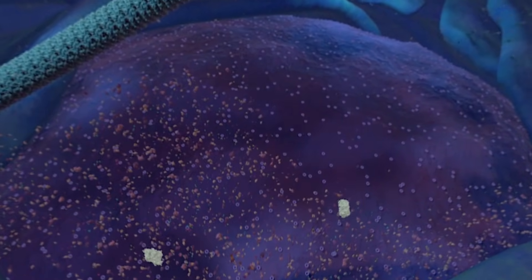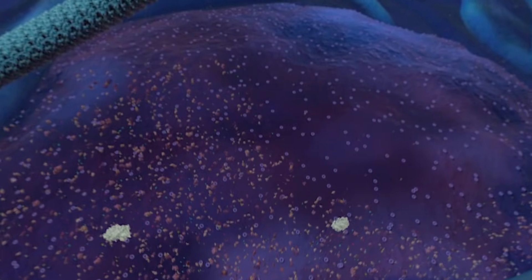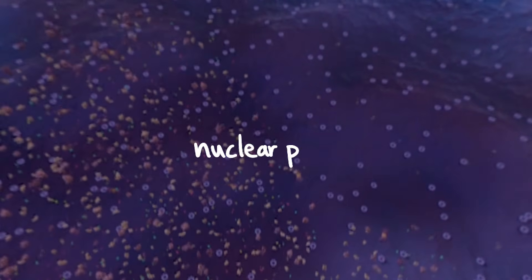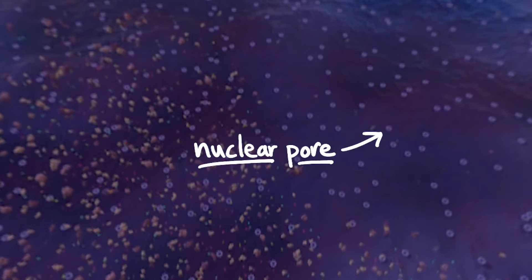On the surface of the nucleus, there are little holes or pores that look like purple donuts. After being made, the RNA copies would leave the nucleus through these holes, which are known as nuclear pores.